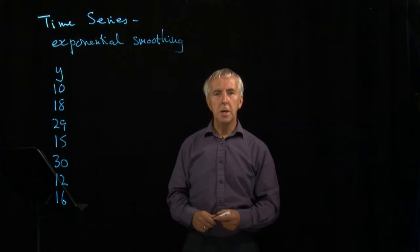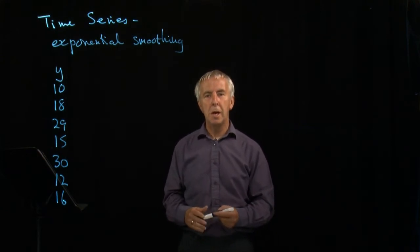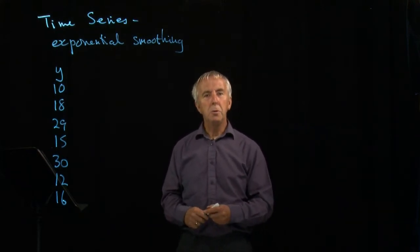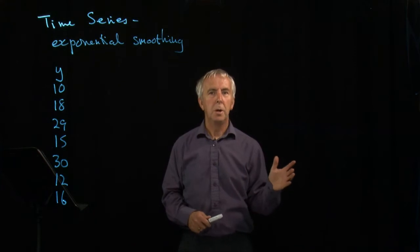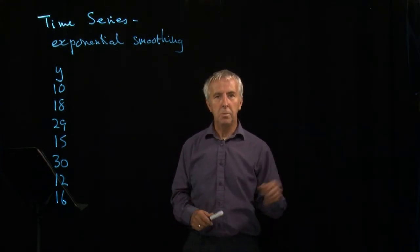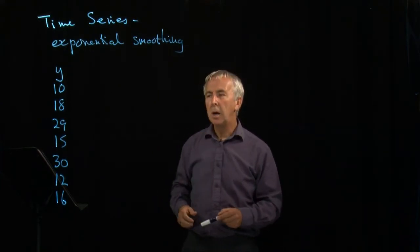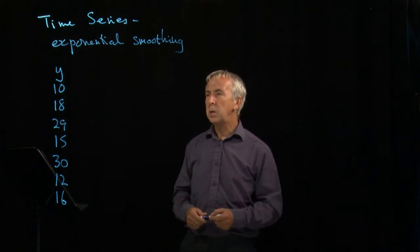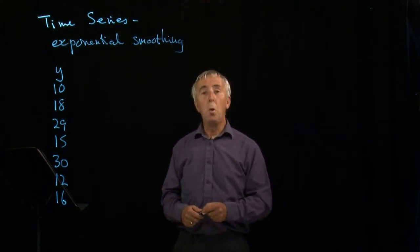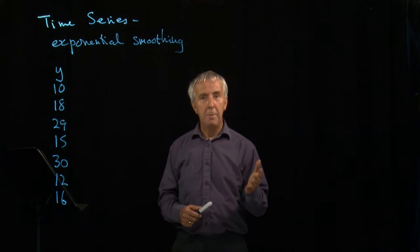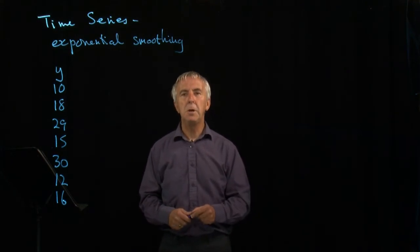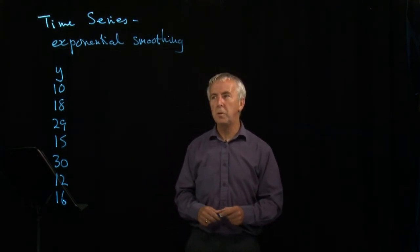Sometimes we have data in a time series where there is no particular pattern, no seasonal variation, no weekly variation, just a series of numbers with nothing we can notice. We still want to be able to predict what's going to happen next, and the way that we do this is by a method called exponential smoothing.